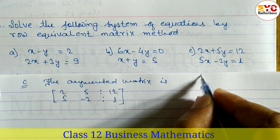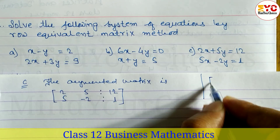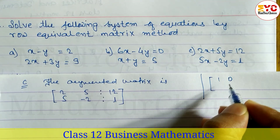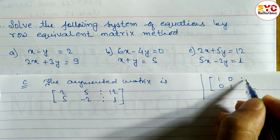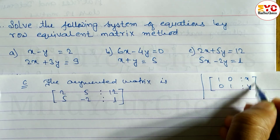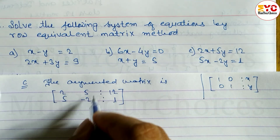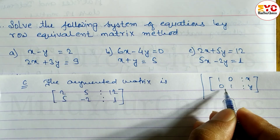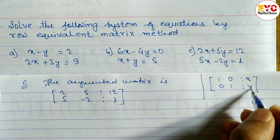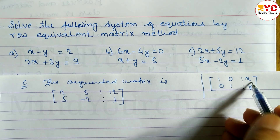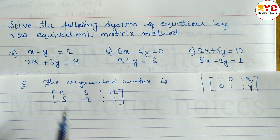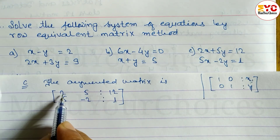We also take this part as the identity matrix. For example, we write 1, 0, 0, 1 here. This part of the identity matrix corresponds to x and y.